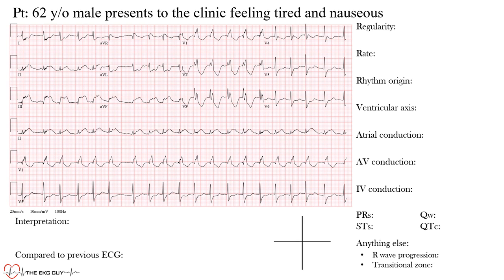Hopefully you had a chance to go through this yourself. Here we have a 62-year-old male presenting feeling tired and nauseous with this EKG. The first thing we want to do is look at the regularity of this rhythm — is this a regular or irregular rhythm? One of the best ways is by looking for a lead that has tall R waves or big complexes.